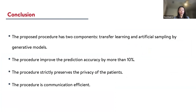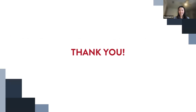Let me make a quick conclusion. Our research proposed a privacy-preserving and communication-efficient information enhancement procedure with two components: transfer learning and artificial sampling by generative models. It improved prediction accuracy by more than 10%, preserved the privacy of the patients, and is communication-efficient. That would be all for my presentation — thank you so much for listening.